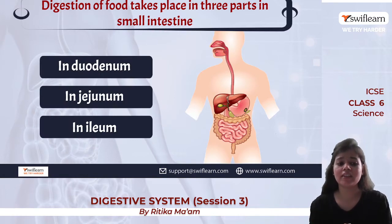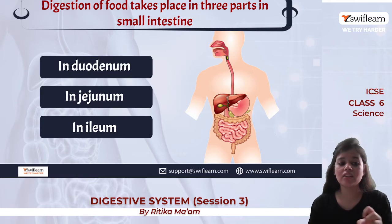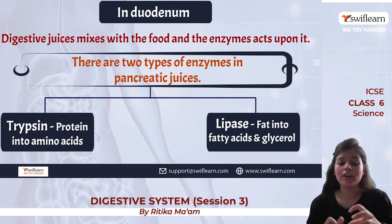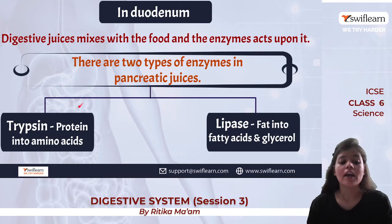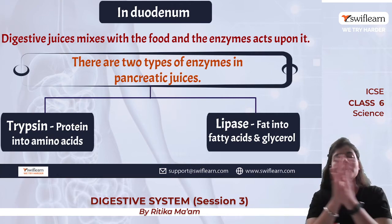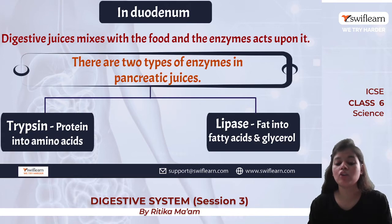Digestion in the small intestine takes place in three main parts: the duodenum, jejunum, and ileum. In the duodenum, digestive juices mix with food and enzymes start acting on it. The two main enzymes in pancreatic juices are trypsin, which converts protein into amino acids, and lipase, which converts fat into fatty acids and glycerol.